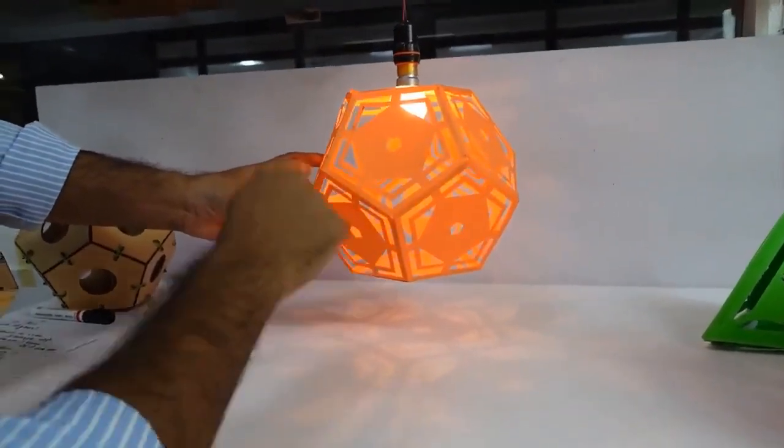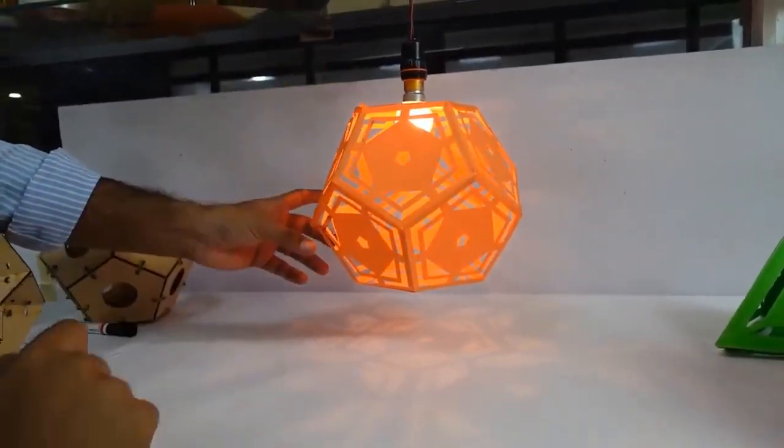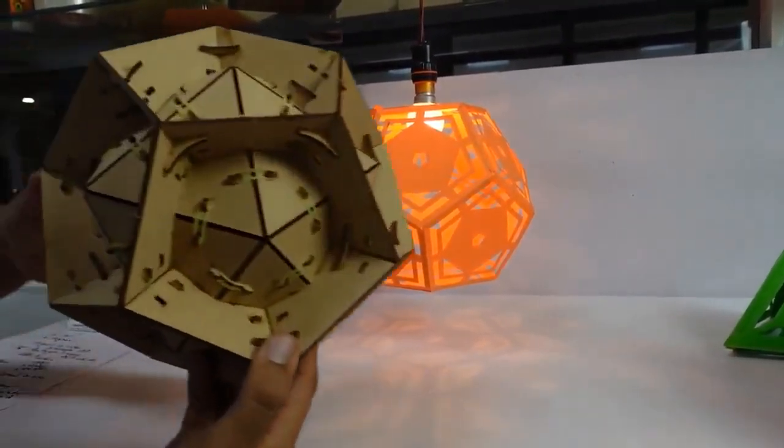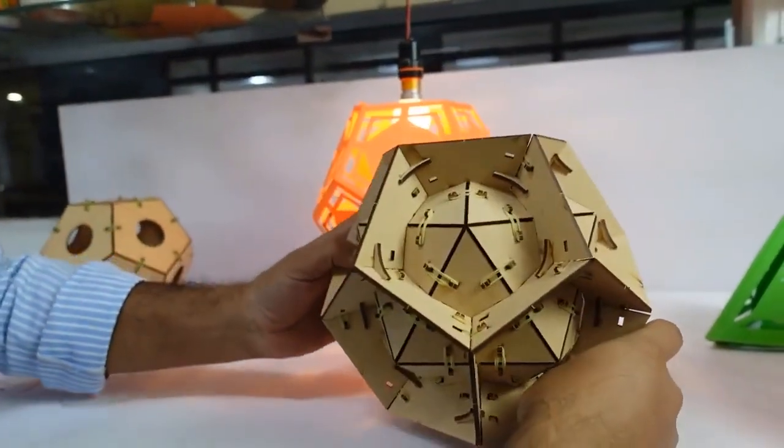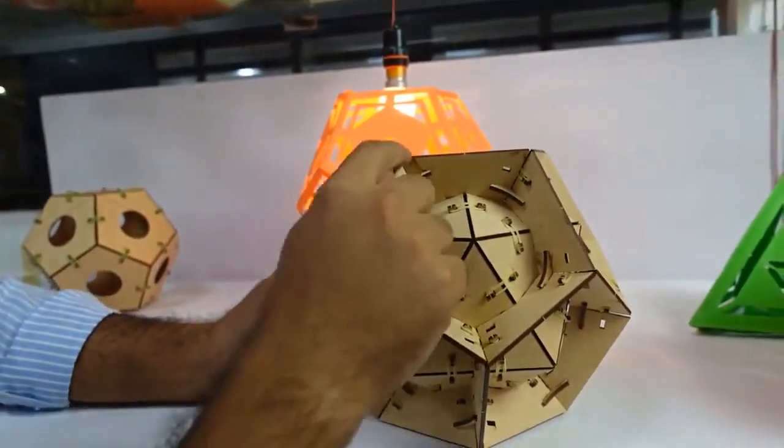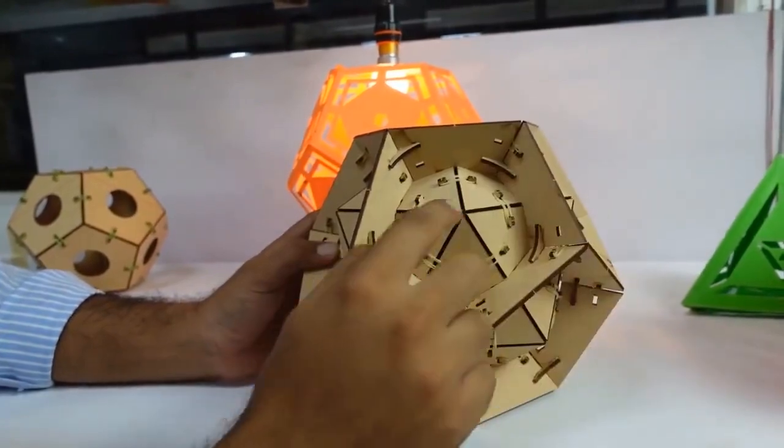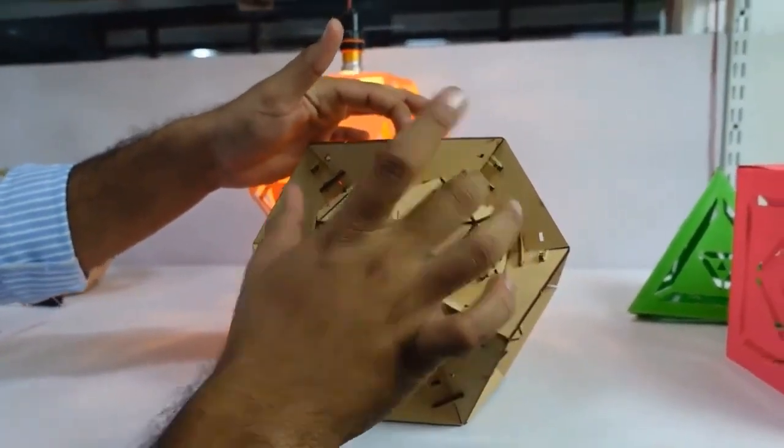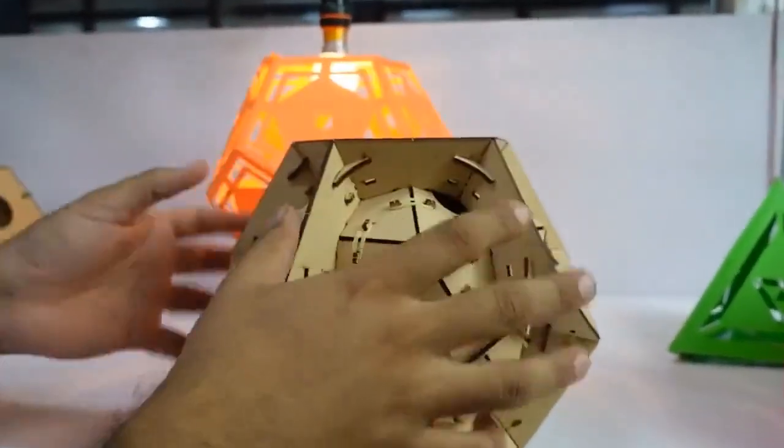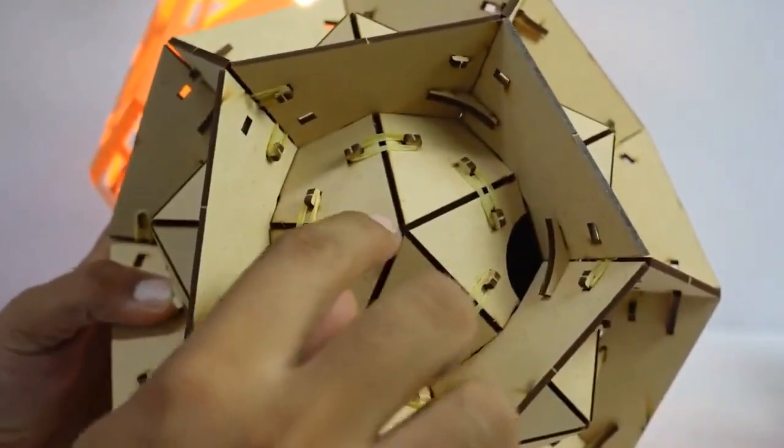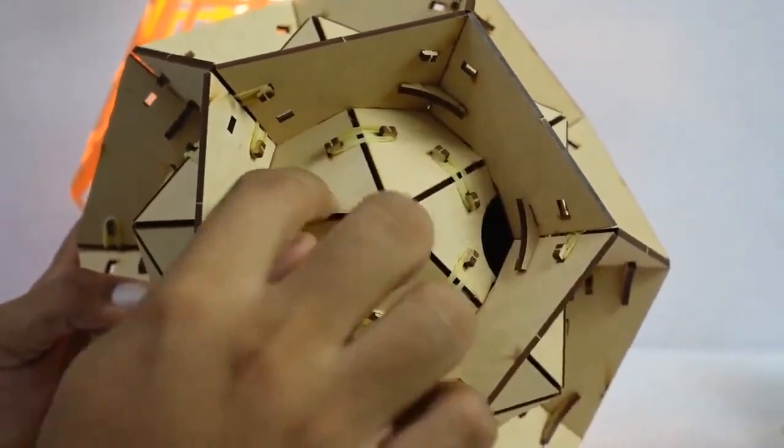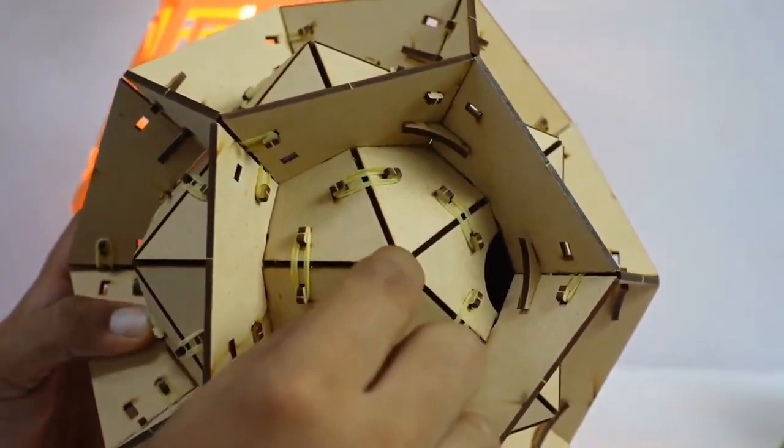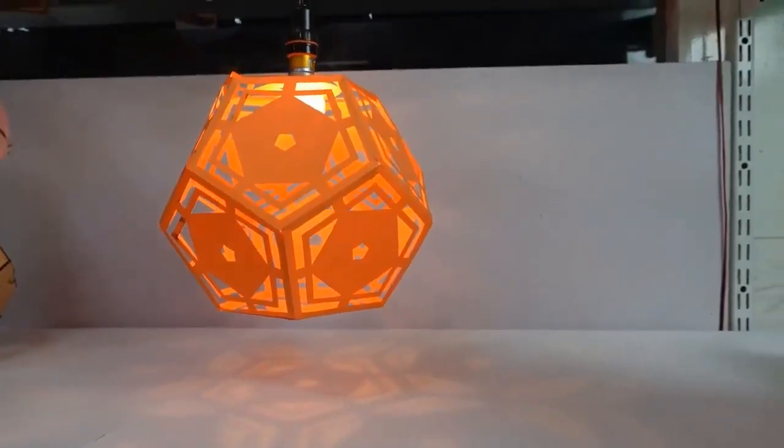Now, if I take the center point of each pentagon and join all the center points, then a new structure is formed. Its name is icosahedron. We have made its model in our lab. In this, you can easily understand that if you join the midpoints of the pentagons, then a triangle is formed. It is made everywhere. On each of its vertices, five triangles are meeting, and this structure is called icosahedron. We will make this structure tomorrow as well.